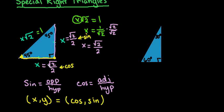Having the knowledge of what a 45-45-90 triangle looks like will help you be able to find the coordinates for (cosine, sine).